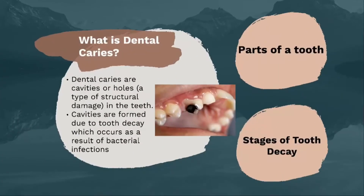Next, what is dental caries? Dental caries are cavities or holes — a type of structural damage in the teeth. Cavities are formed due to tooth decay, which occurs as a result of bacterial infections.